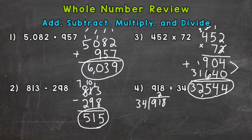Do not put it above the 9, because that's going to mess up the alignment of our places and give us an incorrect answer. It needs to go above the 91. Now we do 2 times 34 is 68. We subtract and we get 23. Bring down our 8.